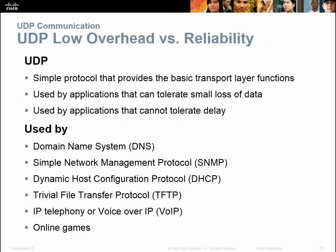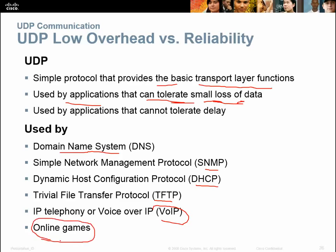UDP has low overhead but low reliability — it's a simple protocol that provides basic transport layer functions. It's used by applications that can tolerate small data loss. For example, streaming video or a voice-over-IP phone call can drop some packets — you can just say, hey, I didn't get that last part. The proverbial 'can you hear me now?' UDP is used by DNS, SNMP, DHCP, TFTP, voice over IP, and online gaming, because that keeps overhead down. But that's also where you get lag. If you've played a game and suddenly your character warps ahead, or you're shooting someone who's already moved — that's UDP and packet loss.